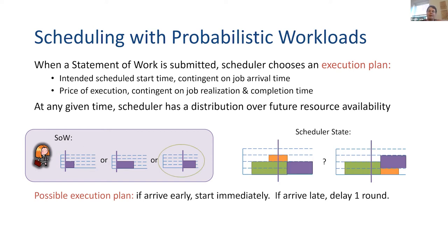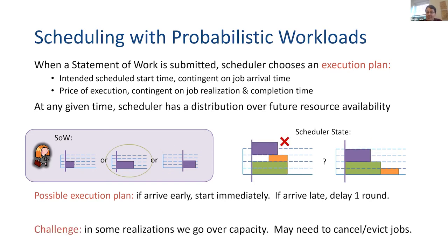There could be realizations of the state and the job where I've actually gone over supply. We actually allow the scheduler to make these sorts of risks — that's fine. In which case we'll just have to do preemption: we'll have to evict jobs and cancel them. Our model can allow situations where you incur a penalty for doing this.